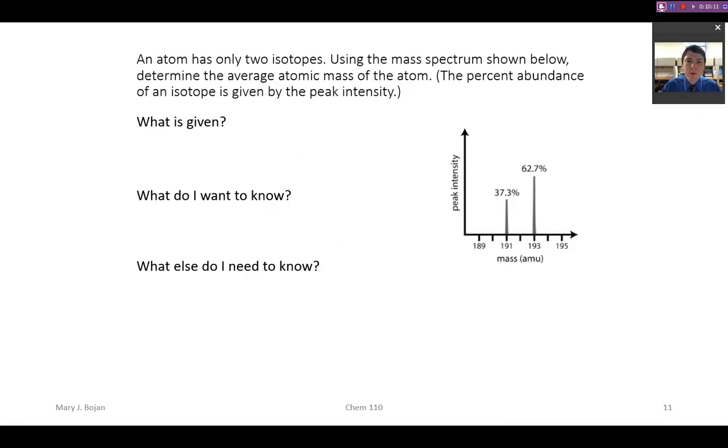So we can use those data to tell us about the average atomic mass. So here is another sample problem, one that I want you to try and work through using the three-step what is given, what do I want to know, what do I need to know model as you were introduced in recitation. So the first question, what information is given? Well, we have two isotopes and we're using the mass spectrum. We're given the isotope mass and the percent abundances. So we have 37.3% at mass 191 amu, and 62.7% at mass 193 amu.